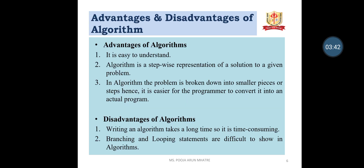Advantages of Algorithms: It is easy to understand because we give a step-by-step procedure. An algorithm is a step-by-step representation of a solution to a given problem, broken down into smaller pieces or steps, making it easier for programmers to convert it into an actual program. Disadvantages: Writing an algorithm takes a long time, so it is time consuming. Increasing the number of steps consumes more time, and branching and looping statements are difficult to show in an algorithm.